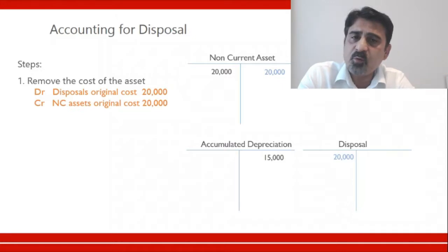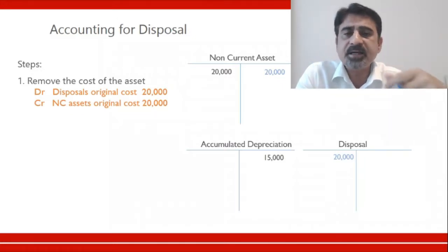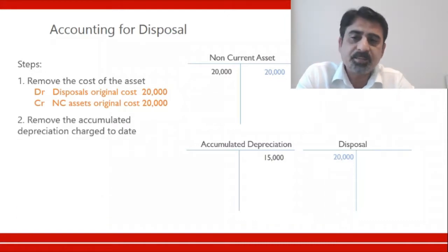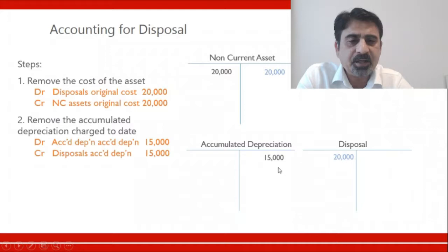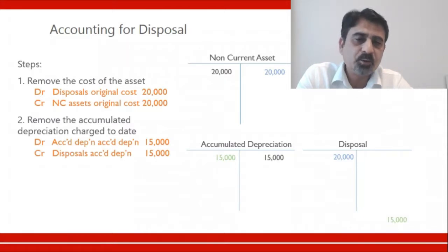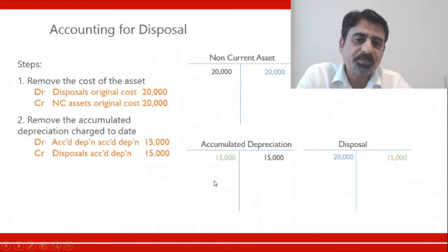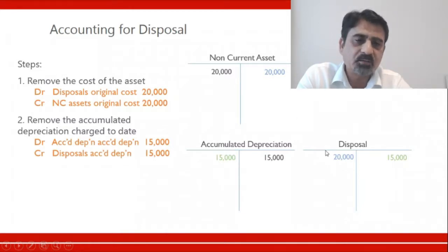Any accumulated depreciation related to this asset must also go with it. The second double entry is: debit accumulated depreciation, credit disposal account. The accumulated depreciation account had a credit balance; now we make it a debit. So now the non-current asset ledger has 20,000 on both sides and the accumulated depreciation ledger has 15,000 on both sides — both have zero balance and are gone. Both amounts have been transferred into the disposal account: asset 20,000 with accumulated depreciation of 15,000.